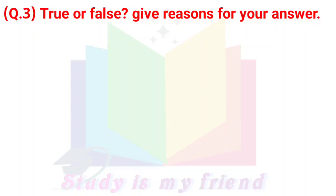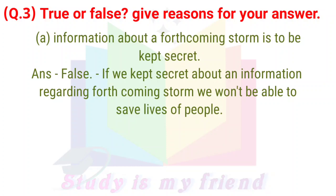Question 3: True or False. Give reasons for your answer. A) Information about a forthcoming storm is to be kept secret. Answer: False. If we kept information about a forthcoming storm secret, we would not be able to save the lives of people.